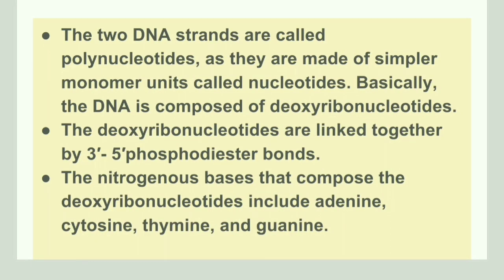The two DNA strands are called polynucleotides, as they are made up of similar monomer units called nucleotides. DNA is composed of deoxyribonucleotides, and these deoxyribonucleotides are linked together by a 3' to 5' phosphodiester bond.